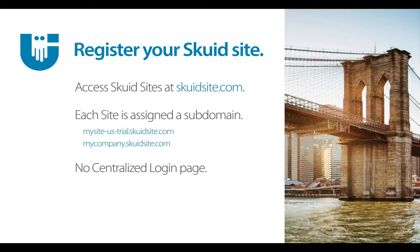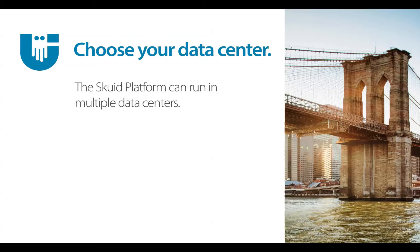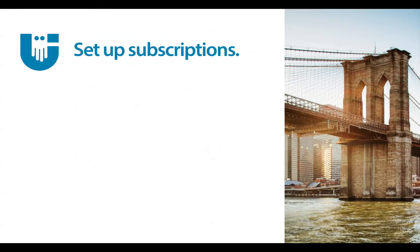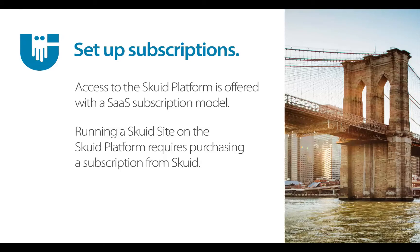The next thing is to choose which region or data center you want your SQUID site to run in. The SQUID platform is built so that it can run in multiple data centers in multiple regions, so you get to choose which geographical region you want. We're launching the SQUID platform in data centers in the United States, Europe, and Australia. SQUID runs on a subscription or software-as-a-service model, meaning you don't have to run SQUID on any of your own infrastructure or servers — SQUID handles that all for you and you pay a subscription to SQUID services.